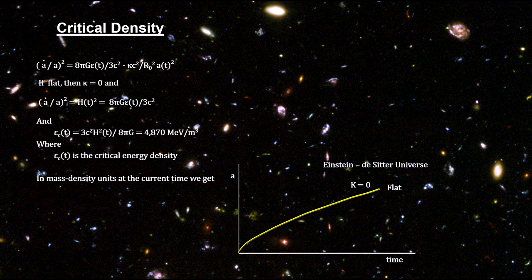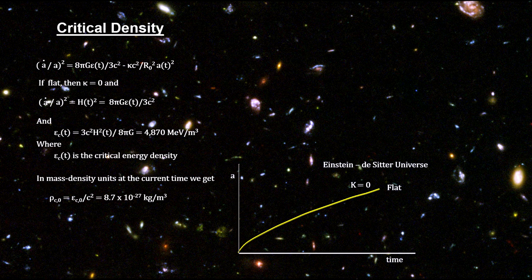This critical mass density comes to around five protons per cubic meter.